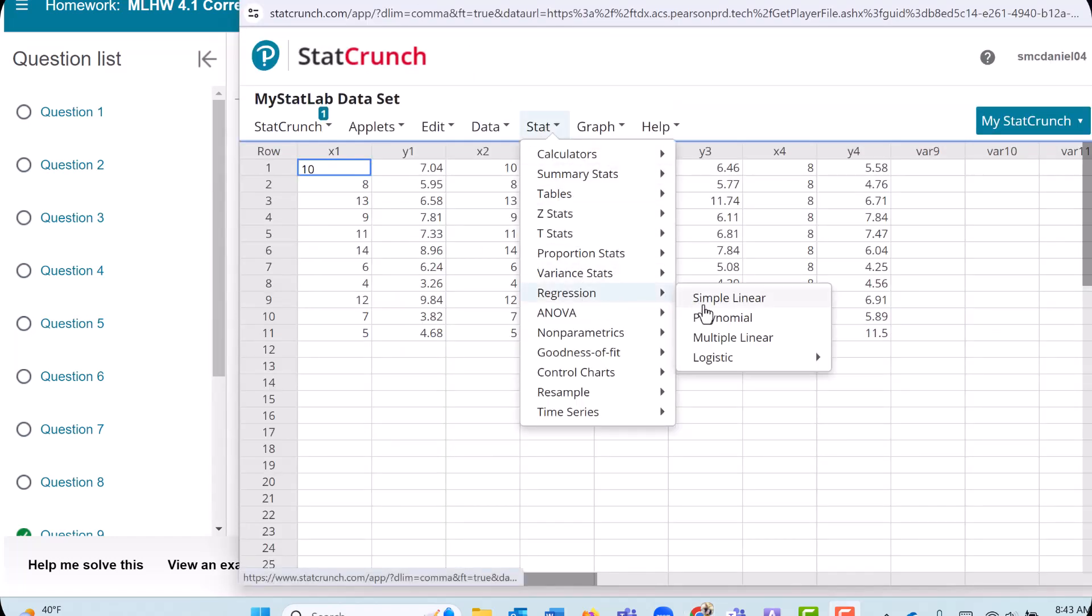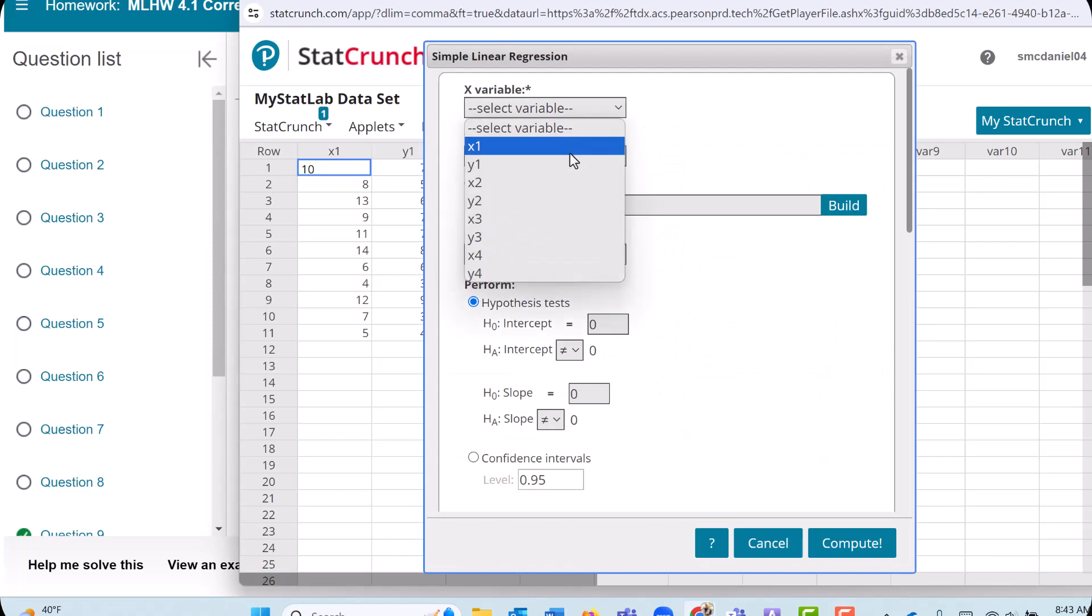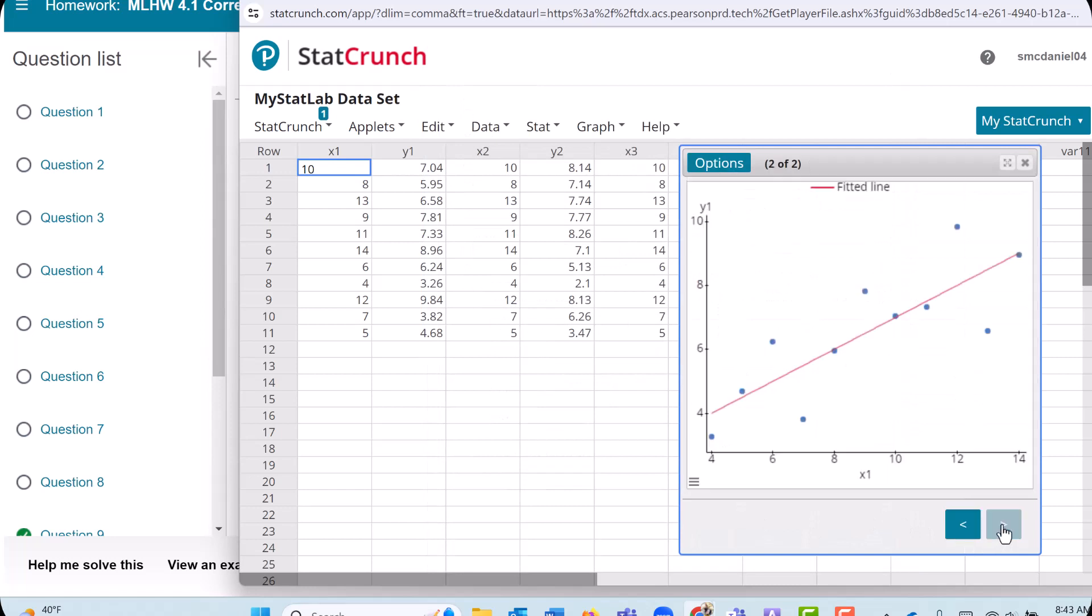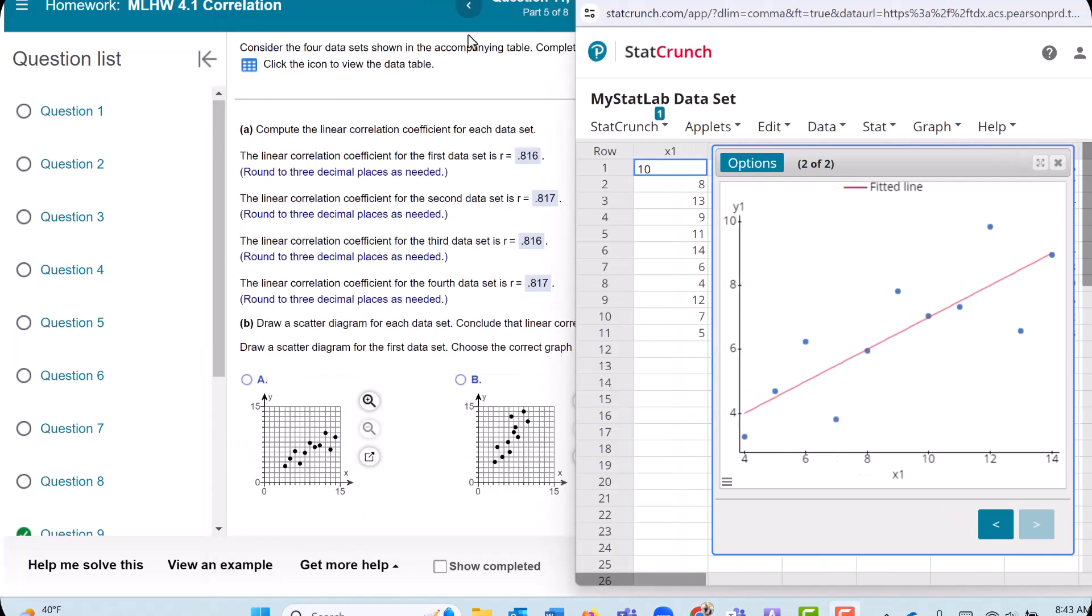We can go into Regression and just rerun that regression. Let me go to X1 and Y1. And then click this little Next button. And here is our first scatter plot, and it has the line superimposed on it. Let's see which one we got here. And that one looks closest to this value here at A.